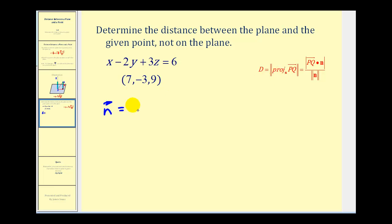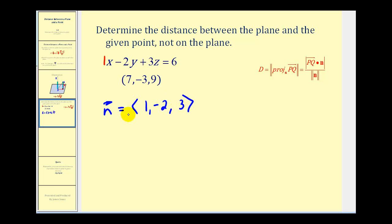Remember when we talked about the equation of a plane — the coefficients of the X, Y, and Z terms give us the component form of the normal vector. Since the coefficient of the X term is one, the coefficient of the Y term is negative two, and the coefficient of the Z term is positive three, the normal vector will be the vector with components one, negative two, and positive three.